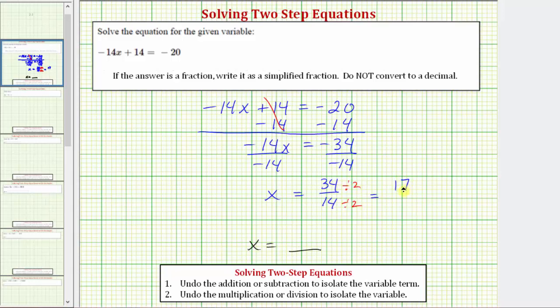34 divided by two is equal to 17. 14 divided by two is equal to seven. The only common factor between seven and 17 is one, and therefore we now have our solution as a fraction in simplest form. Our solution is 17 sevenths.